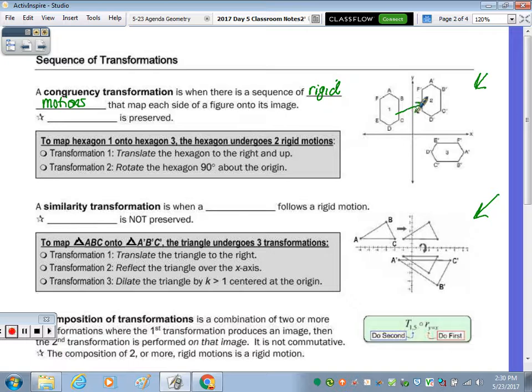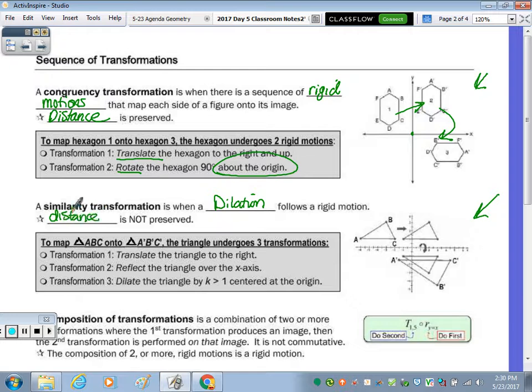So here, we first went from one to two by translating the hexagon right and up. And then there was the rotation. Notice it said about the origin. So big thing with the rigid motion is that your distance is preserved. With similarity, what transformation has to be one of the transformations? A dilation. So similarity transformation is when a dilation follows a rigid motion as distance is not preserved. So first, it was translated. So it was just moved right. And then it was reflected over the x-axis. And then dilated just by k greater than 1. We don't know what it is, but we know it got bigger. Centered at the origin.